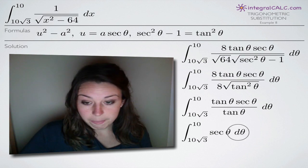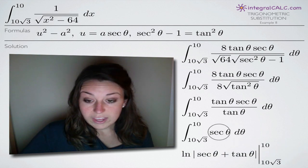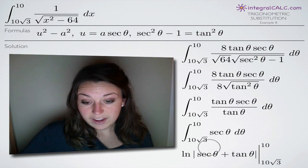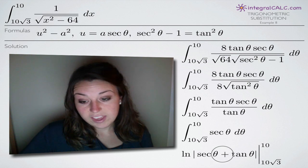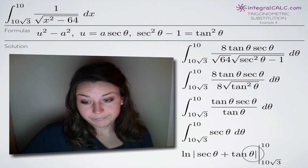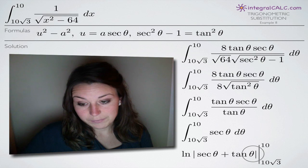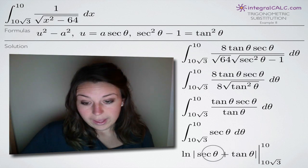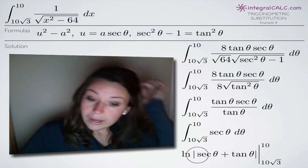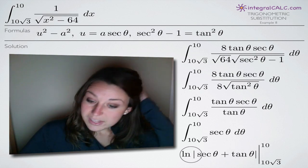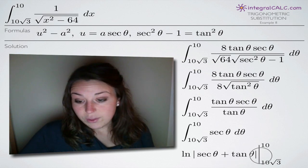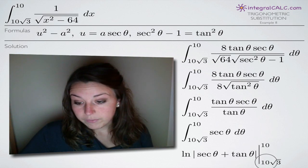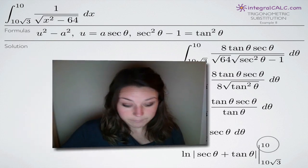The formula for the integral of secant of theta is the natural log of the absolute value of secant of theta plus tangent of theta — that's a standard trigonometric integral formula. So we take the natural log of the absolute value of (secant theta plus tangent theta), and we'll be evaluating from 10 square root of 3 to 10.